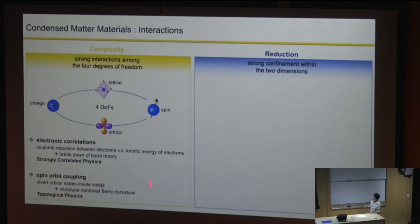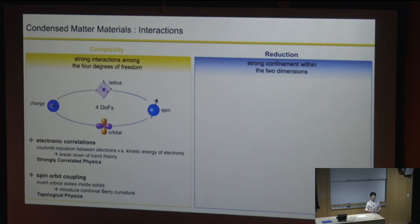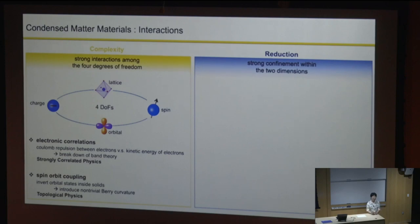Another interaction that people have been so interested in over the past few decades is spin-orbit coupling, a relativistic effect at the atomic scale. The electron orbiting around the positive core generates an effective current, which gives an effective magnetic field that acts on the spin to give an energy correction. When this energy correction becomes large enough, you can actually flip the orbital orders—for example, sometimes s orbital has higher energy than p orbital in a certain atomic system.